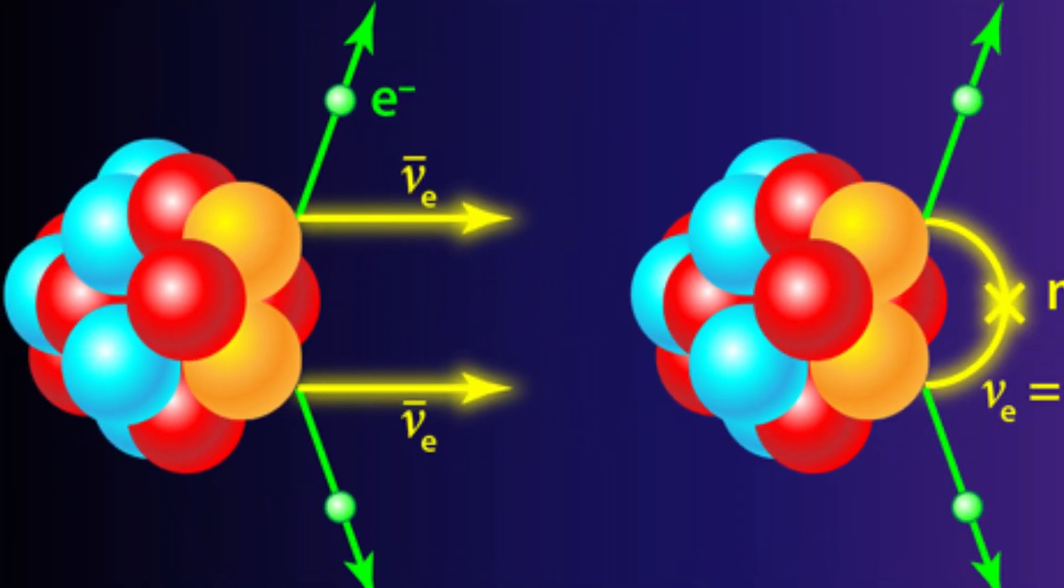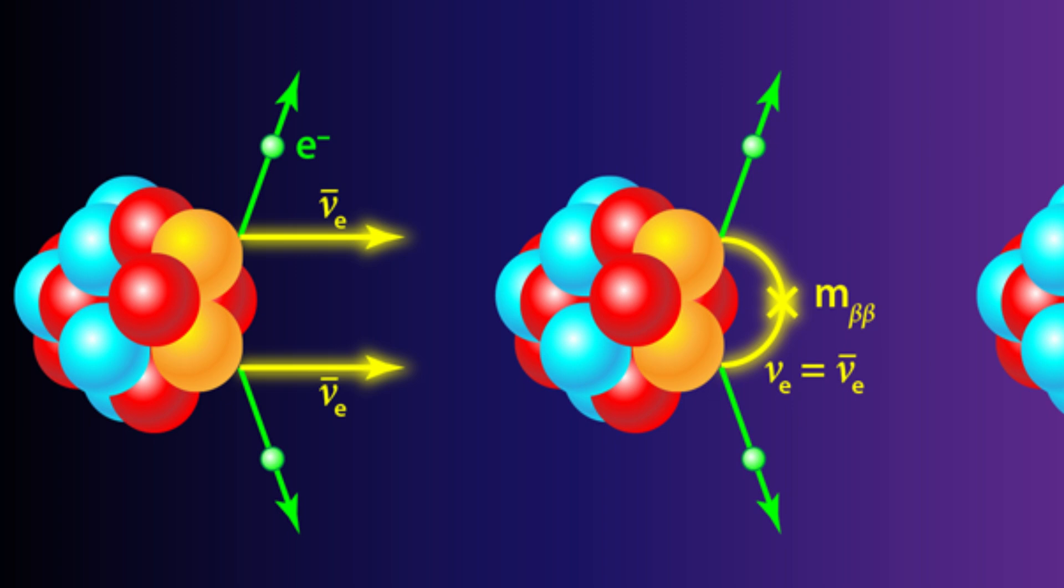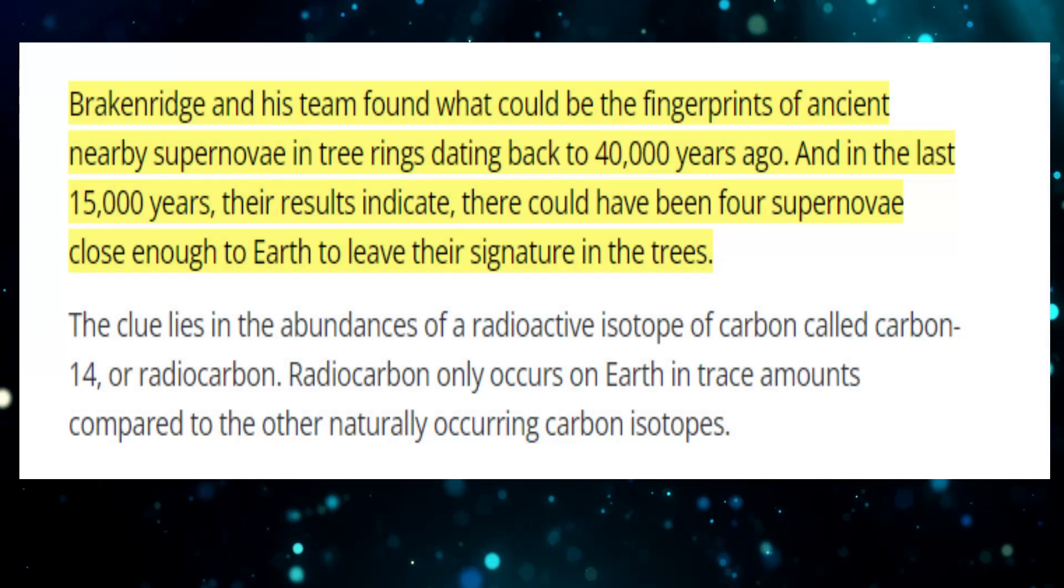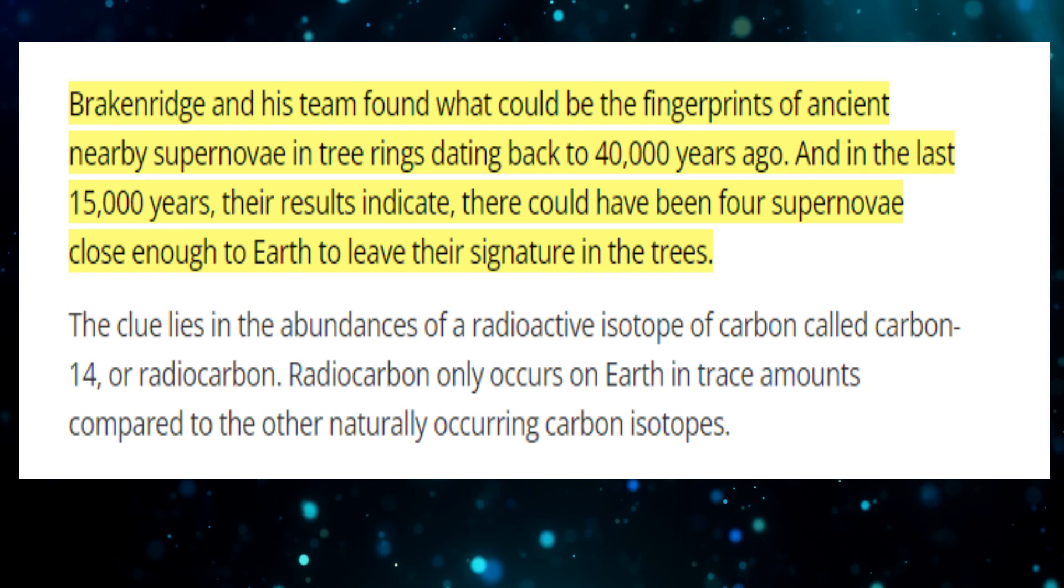So how does this work? The clue is in the abundance of a radioactive isotope called carbon-14 or radiocarbon. Robert Breckenridge is a geoscientist discovered this at the University of Colorado Boulder.